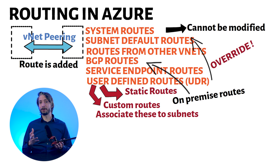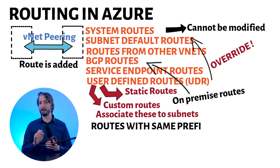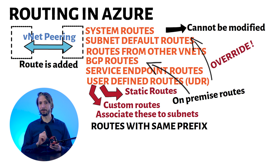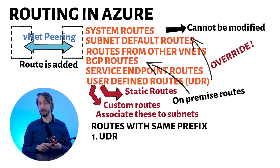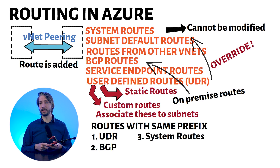When you have competing entries in a routing table, Azure selects the next hop based on the longest prefix match, similar to traditional routers. However, if there are multiple next-hop entries within the same address prefix, Azure selects routes in the following order: first, user-defined routes (UDRs); then BGP routes; then system routes; and finally security.